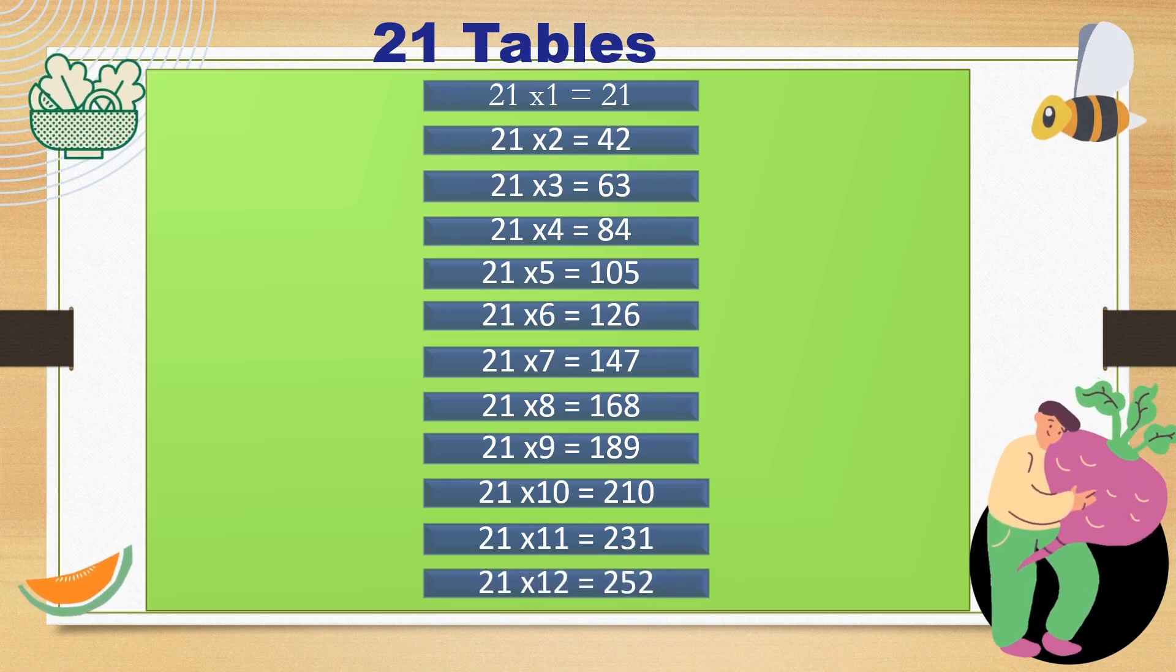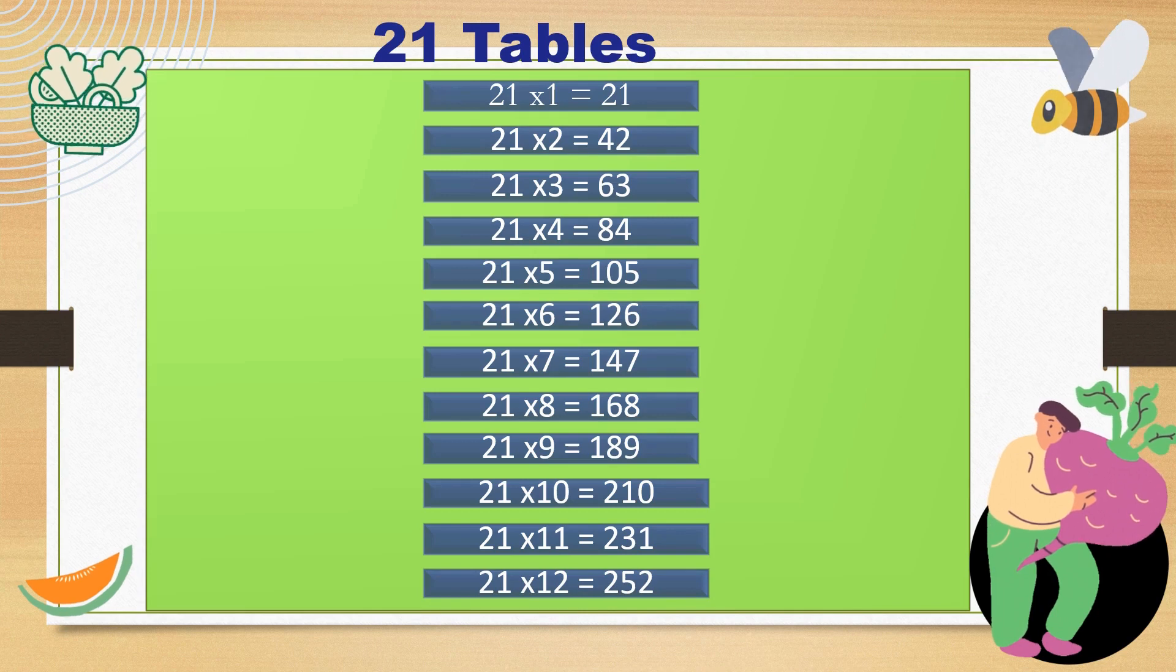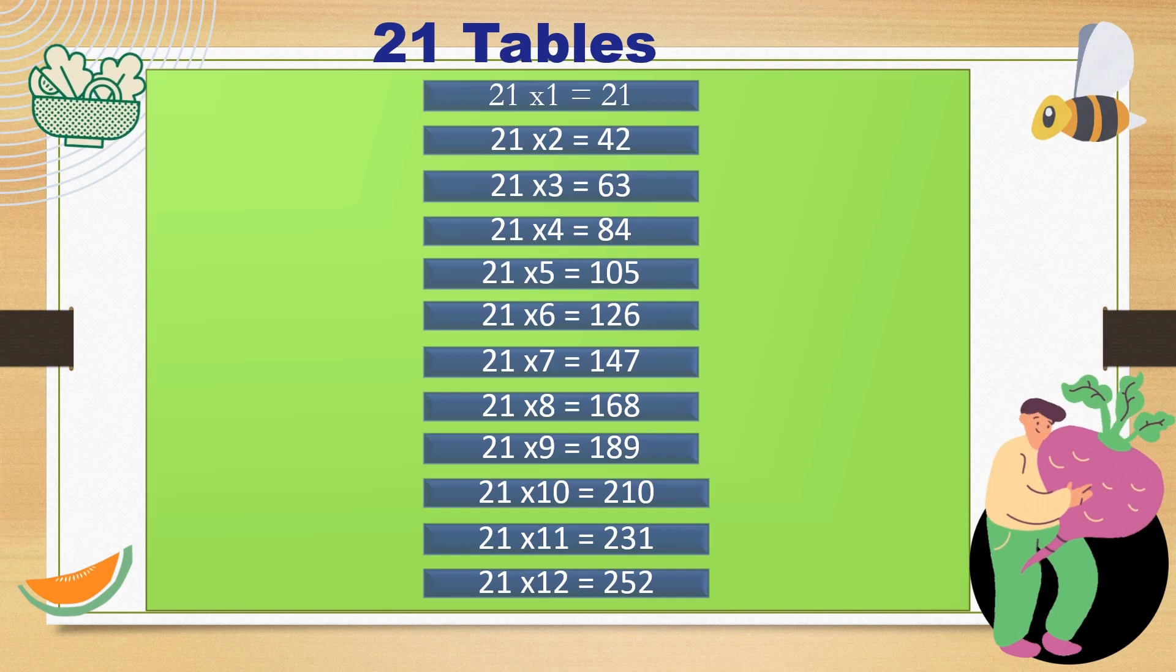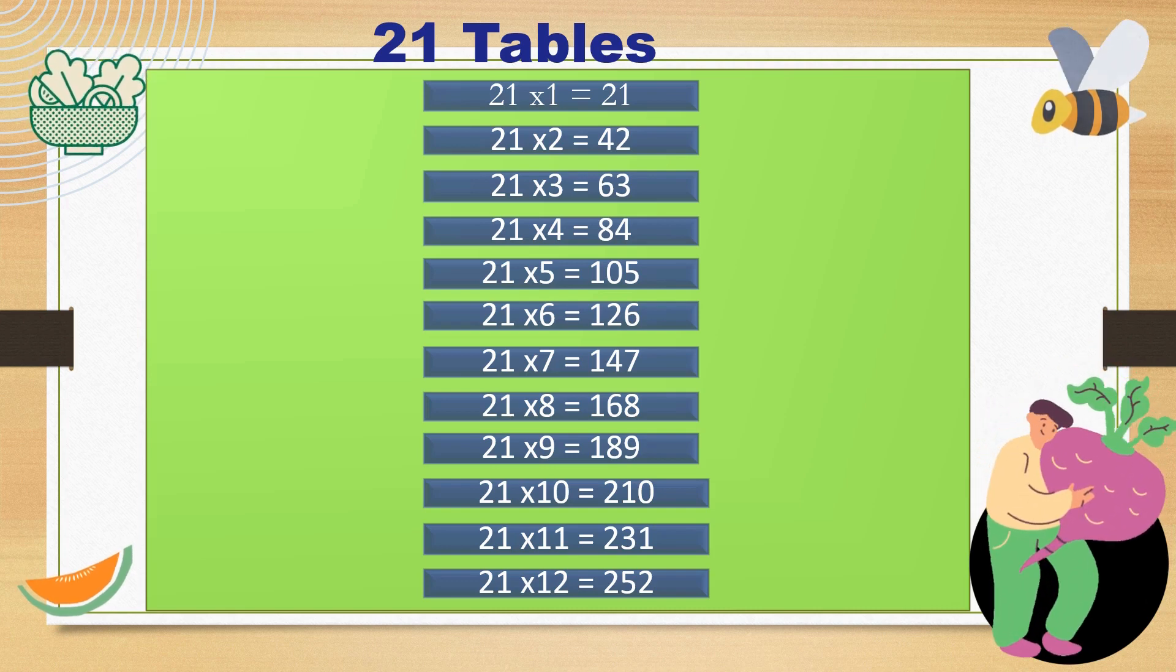Math's the puzzle, and we've got the right state. 21 times 9 is 189. Each multiplication, like stars, they shine.